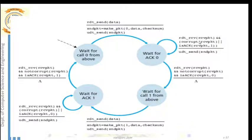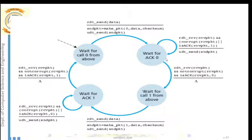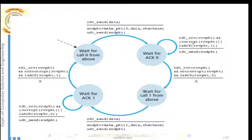So the conditions checked are: if the received packet is corrupted, OR if the received acknowledgement is not the expected one (expecting ACK 0 but getting ACK 1). If either condition is true, the sender retransmits the packet with sequence number zero, since the receiver may not have received it properly.